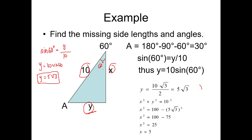Now, we already have the value of y, but we have to find the value of x. Using the Pythagorean theorem, or you can use cosine here. We have 5 square root of 3 squared plus x squared equals 10 squared. Therefore, your x squared equals 100 minus 75. So, x squared equals 25. So, x is equal to 5.